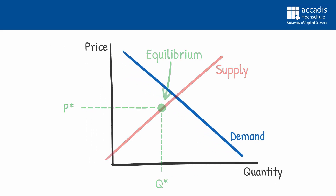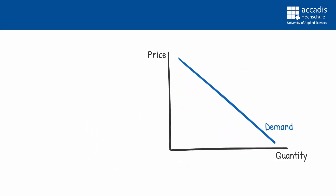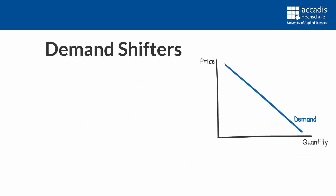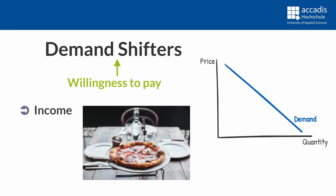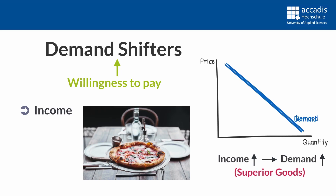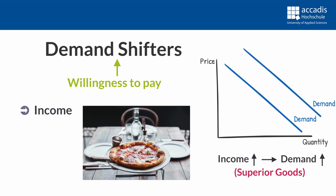Demand and supply might change, however. Demand, for example, is changing when the willingness to pay for the product in question is changing. This might happen for several reasons. Firstly, income plays a large role. An increase in income typically increases the willingness to pay for certain products. For example, you go to the restaurant more often to eat pizza when you have a higher income.